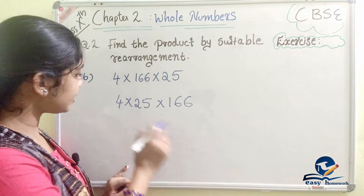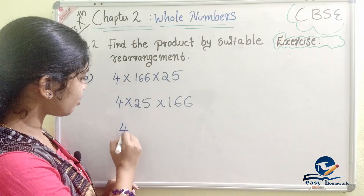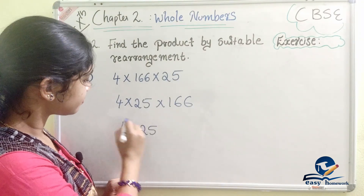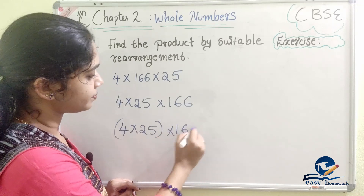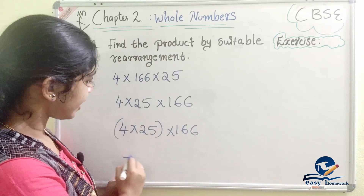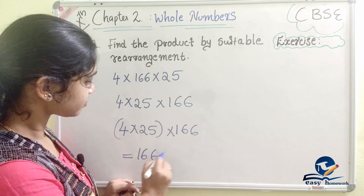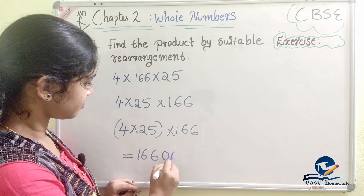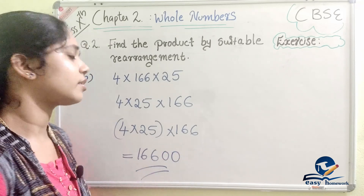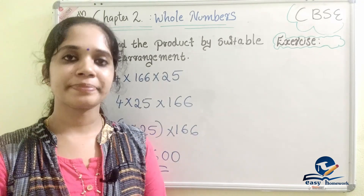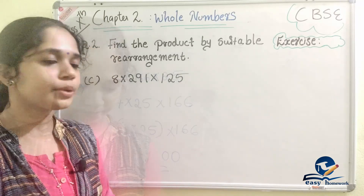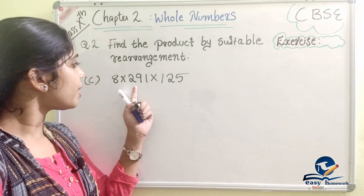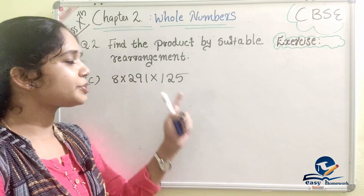We apply the associative property. 4 × 25 = 100, then 100 × 166 gives the answer. Next question: 8 × 291 × 125.